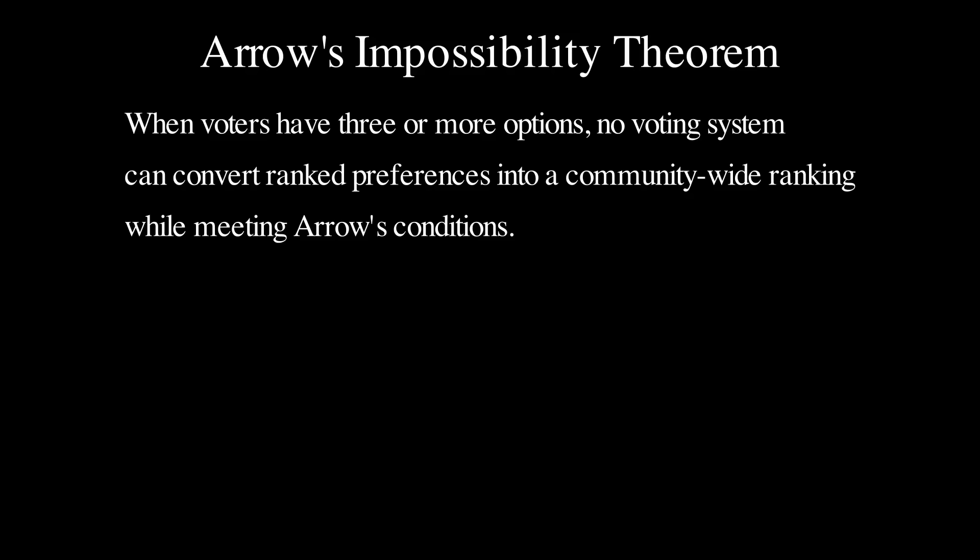Let's try to break this down. Imagine a voting system where voters order their preferences from most to least favorite. Arrow's theorem shows that such a system can't achieve all of the following at once.